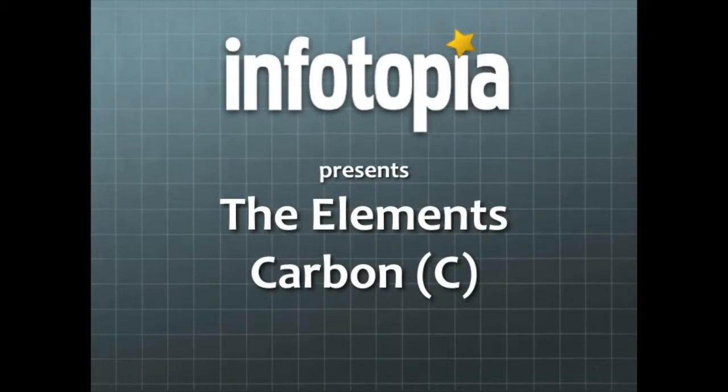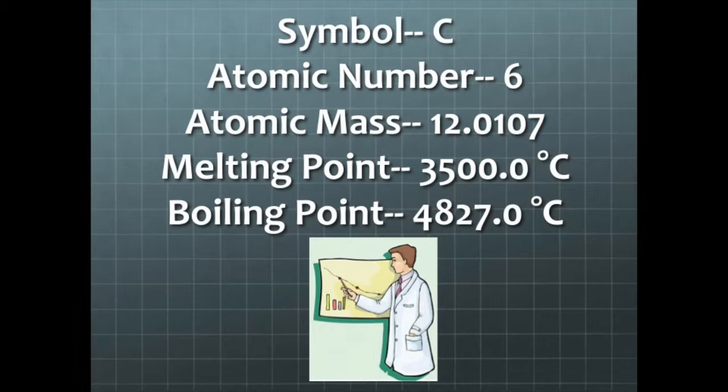Infotopia presents the elements carbon. The symbol for carbon is C, the atomic number is 6, and here is the mass, the melting point, and the boiling point.